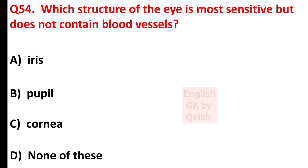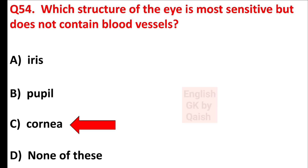Which structure of the eye is most sensitive but does not contain blood vessels? Answer is option C — cornea. Friends, if you liked the video, then please subscribe to our channel. Thank you.